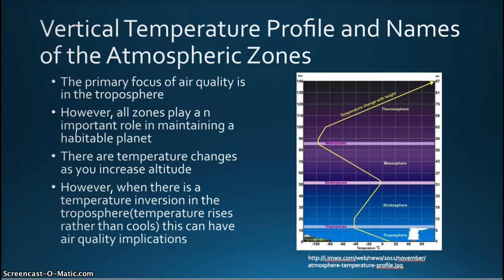The last two layers, the mesosphere and the thermosphere, both play important roles in protecting the Earth from excessive electromagnetic radiation.